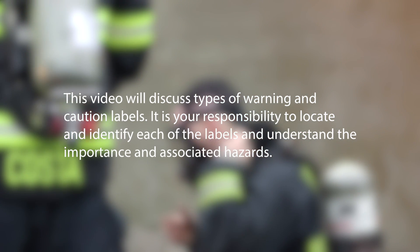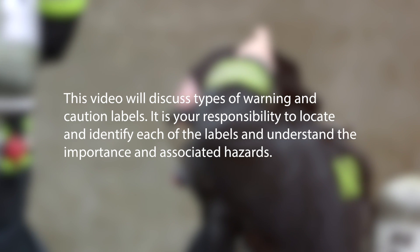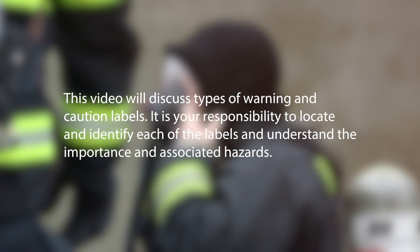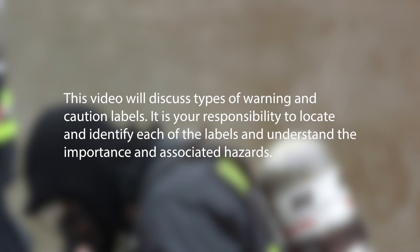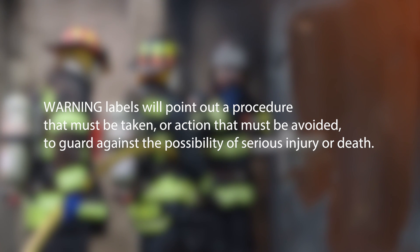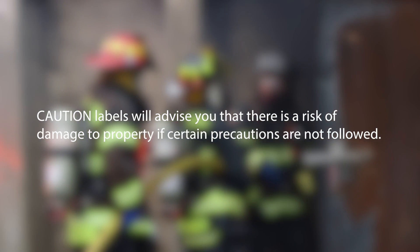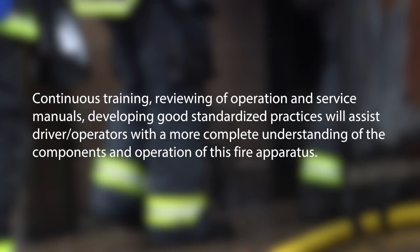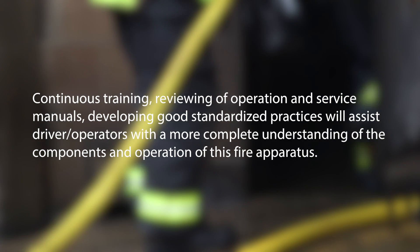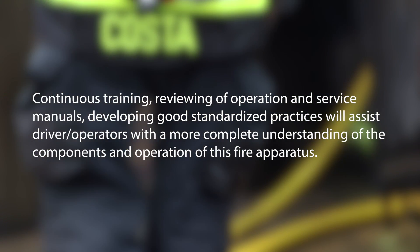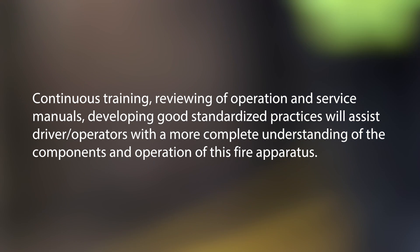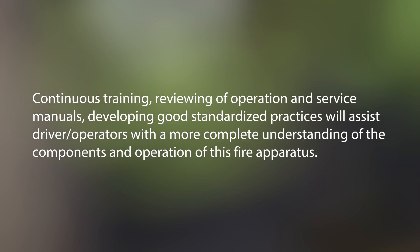This video will discuss types of warnings and caution labels. It is your responsibility to locate and identify each of the labels and understand the importance and associated hazards. Warning labels will point out procedures that must be taken or actions that must be avoided to guard against the possibility of serious injury or death. Caution labels will advise you that there is a risk of damage to property if certain precautions are not followed. Continuous training, reviewing of operation and service manuals, and developing good standardized practices will assist driver operators with a more complete understanding of the components and operation of this fire apparatus.